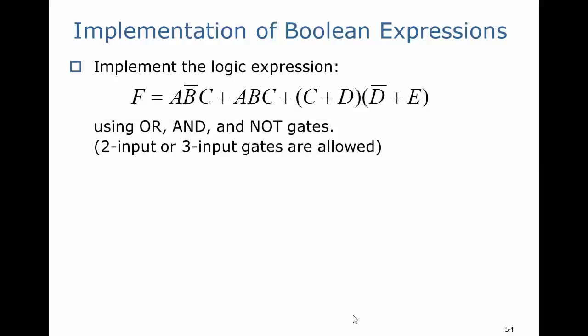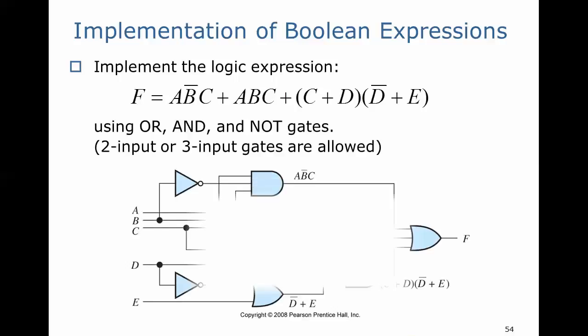So we've seen that we can easily implement a Boolean expression using OR, AND, and NOT gates. We did this for the following example, but now we want to take a quick look at whether it's possible to simplify this expression so that the implementation requires fewer gates.